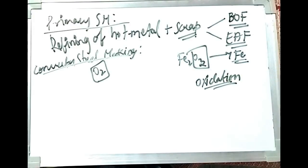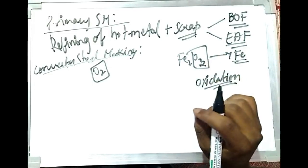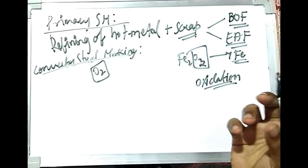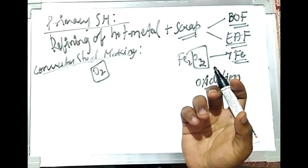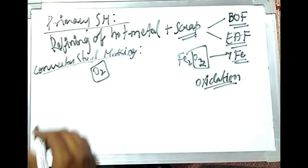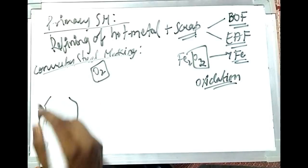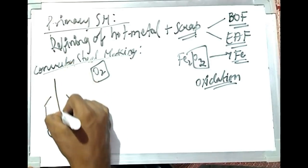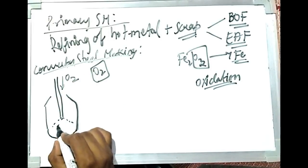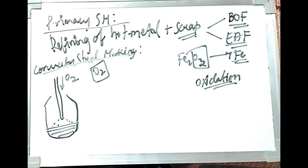In converter steel making, pure oxygen is blown from the top using a water-cooled lance — a hollow cylindrical pipe with multiple nozzles at one end. This is called top blown steel making. The vessel contains the hot metal, and the lance blows oxygen down into it through the nozzles.